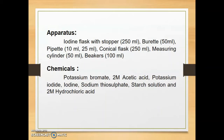For the actual procedure, we require the following apparatus: iodine flask with stopper, 25 ml burette, 50 ml pipette, 10 ml and 25 ml conical flask 250 ml, measuring cylinder 50 ml, and beaker 100 ml. Chemicals required: potassium bromide, 2 molar acetic acid, potassium iodide, iodine, sodium thiosulfate, starch solution, and 2 molar hydrochloric acid. Now for the actual procedure, we move towards the laboratory.